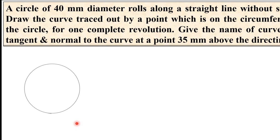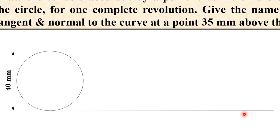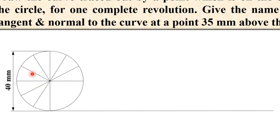Now give the dimension. This is the reference horizontal line called the directing line. Initially, take a random length for this horizontal line. Now divide the circle into 12 equal parts. If you don't know how to do that, refer to my earlier video on dividing the circle into 12 equal parts.